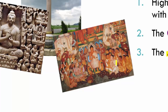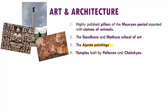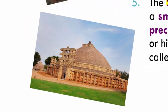We have the temples built by the Pallavas and Chalukyas, which are great architectural monuments. Then we have the stupas and viharas associated with Buddhism. A small box is placed in the center of the stupa containing precious stones, coins, and bodily remains of Buddha or his disciples. A path called the Pradakshina is laid around the stupa, surrounded by railings, which adds to the stupa's appearance.